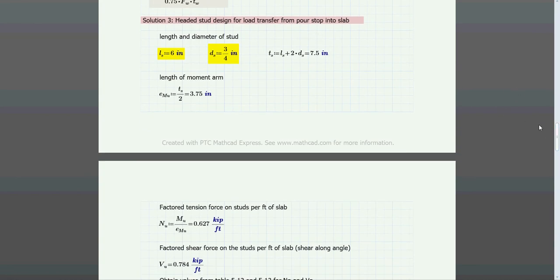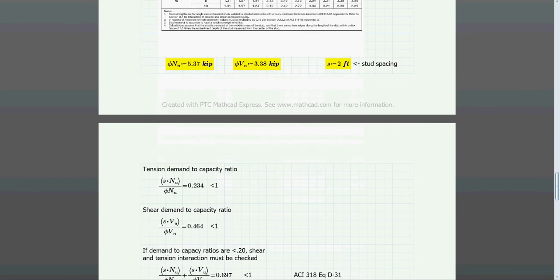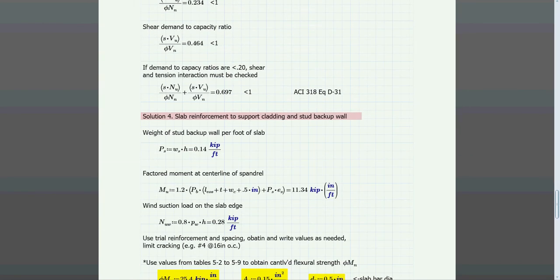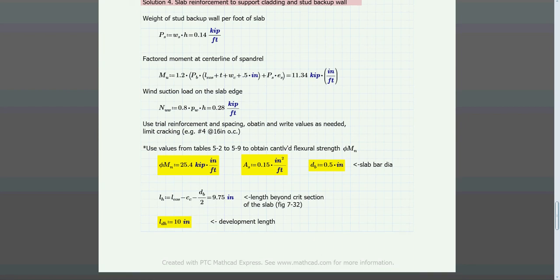We're going to jump into the last solution, which is the slab reinforcement to support the cladding and backup wall. We're going to get the development length. We input the values—you need the table from this book to obtain these values. I'm pretty sure that table should be somewhere online.